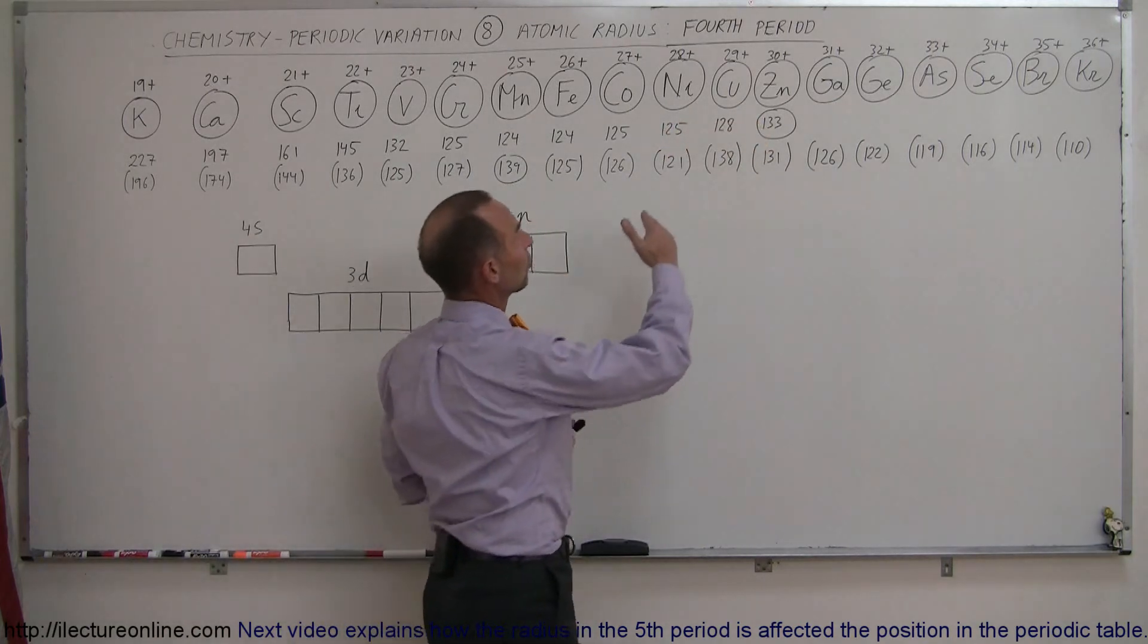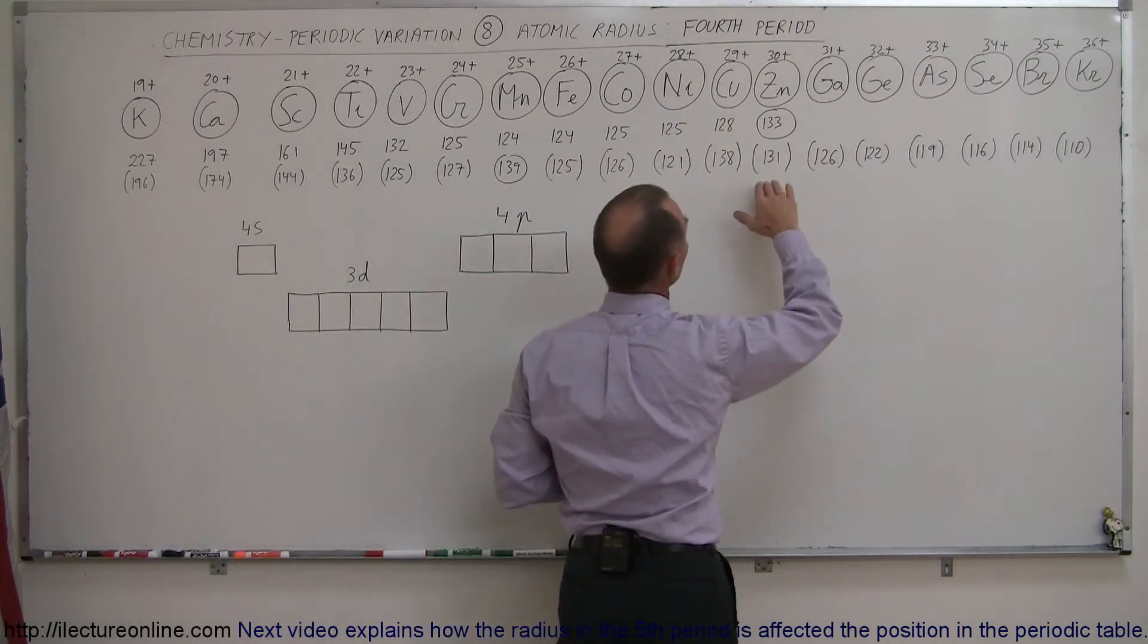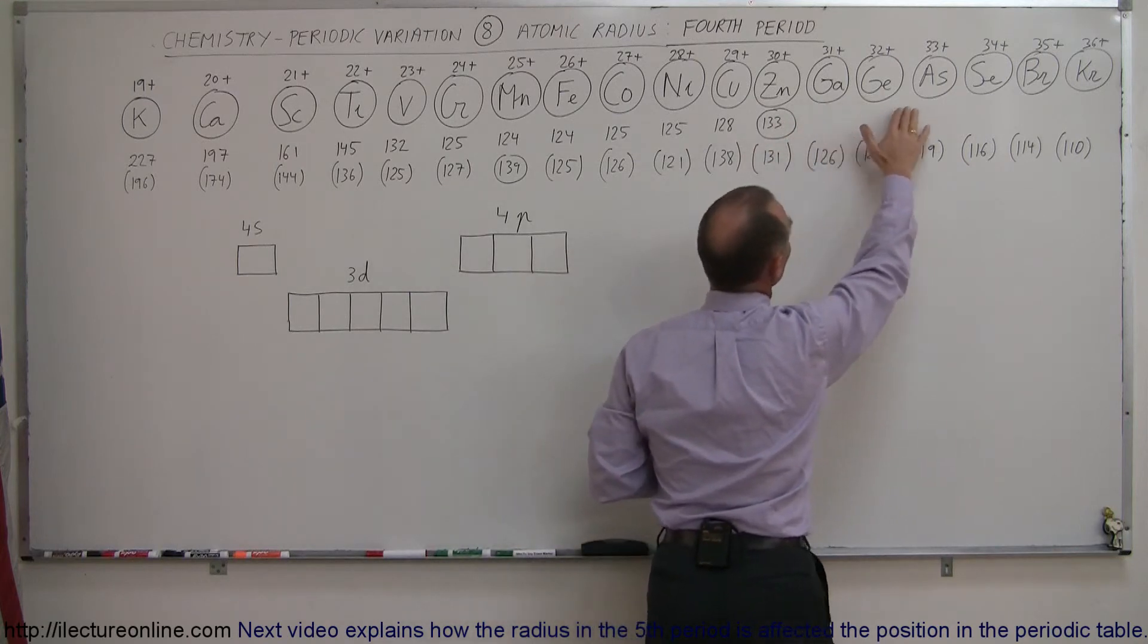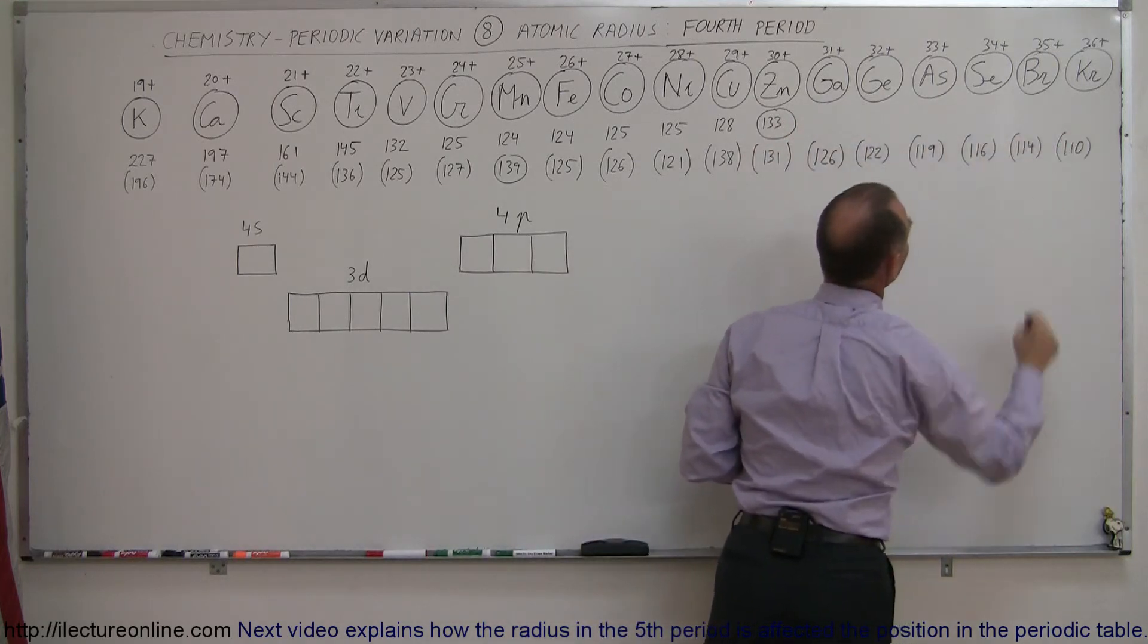And then the representative elements: we have gallium, germanium, arsenic, selenium, bromine, and krypton.